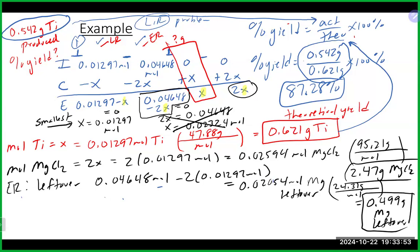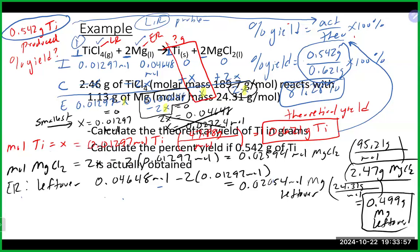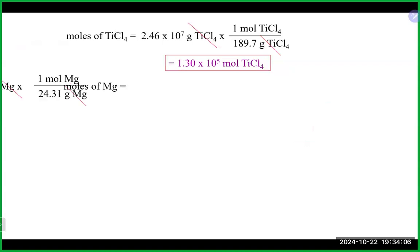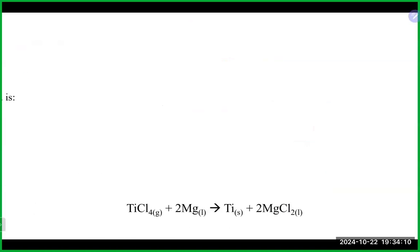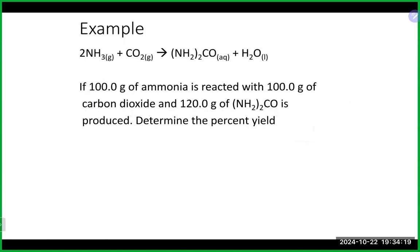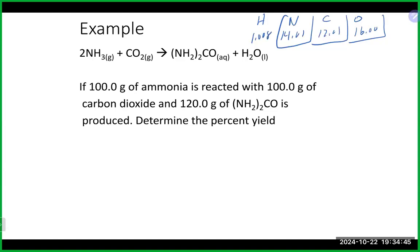Let's try another example. We have 100 grams of ammonia and 100 grams of carbon dioxide reacting. We produce 120 grams of product. What is the percent yield? Helpful molar masses: nitrogen 14.01, carbon 12.01, oxygen 16, hydrogen 1.008.